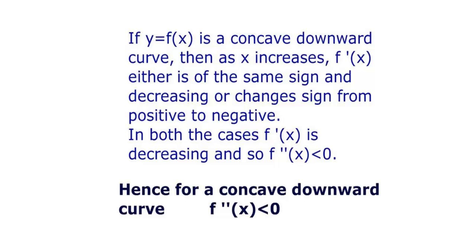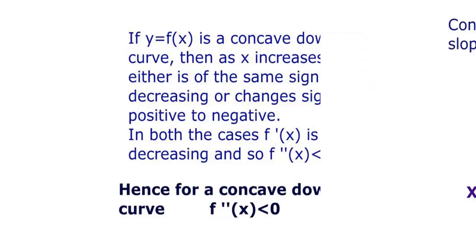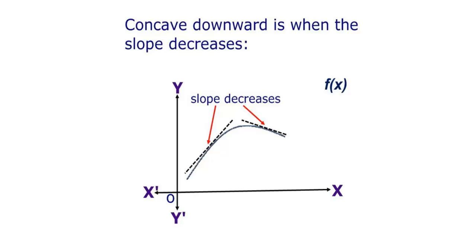Concave downward is when the slope decreases, because f'(x) is decreasing. We can see in the figure that the slope is decreasing continuously when the curve is concave downward.